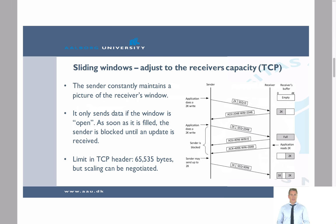After some time, the receiving side has handled the data and sends back another acknowledgement with an updated window size — now allowing 2KB more. The sender sends only 1KB this time. The receiver constantly communicates the window size to the sender, and if it becomes 0, the sender is blocked until it receives an update.